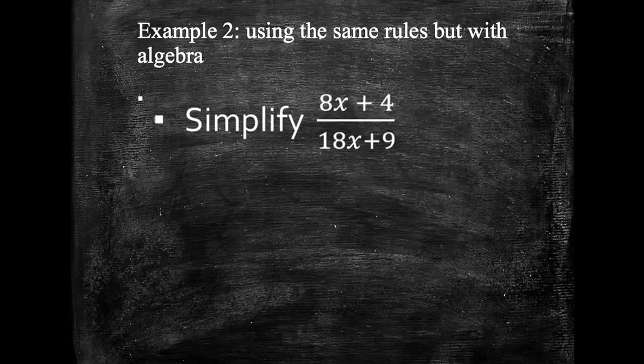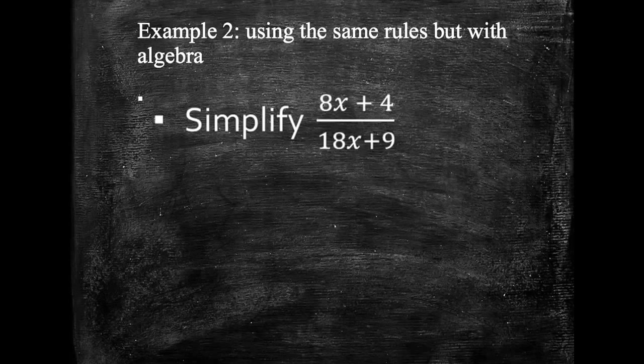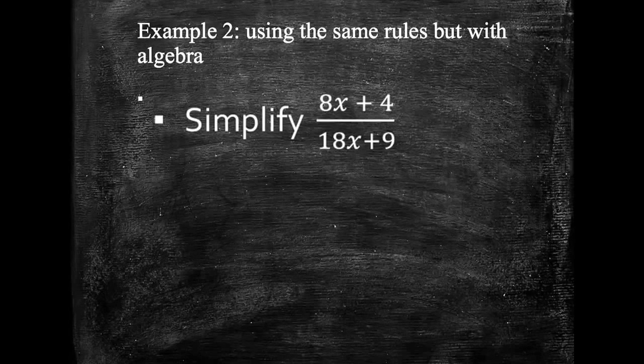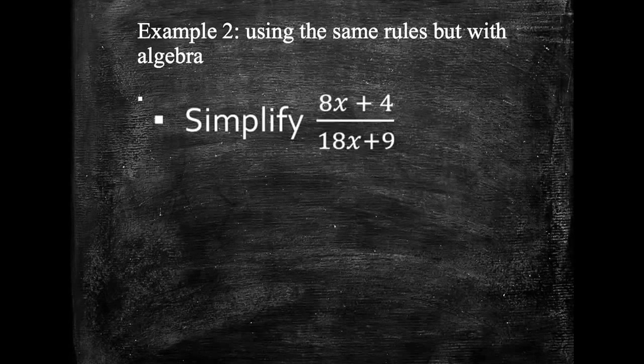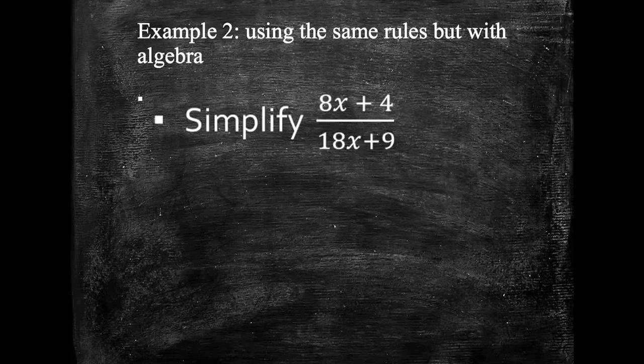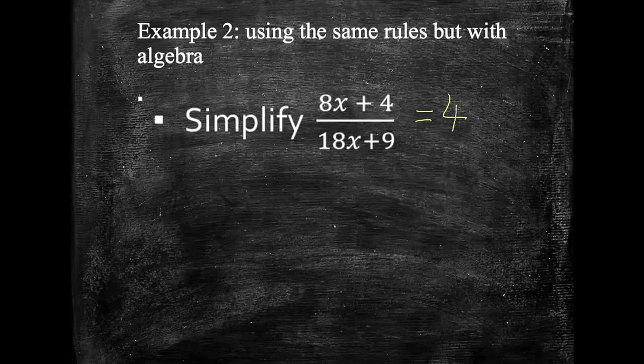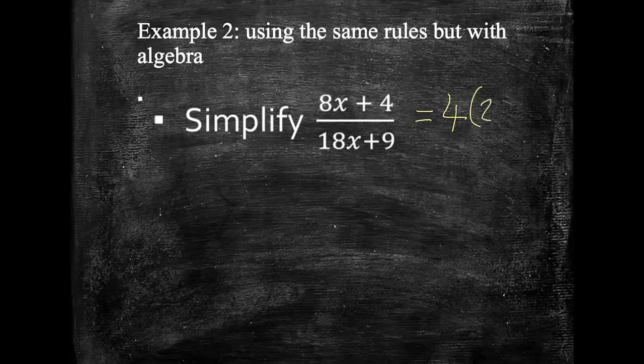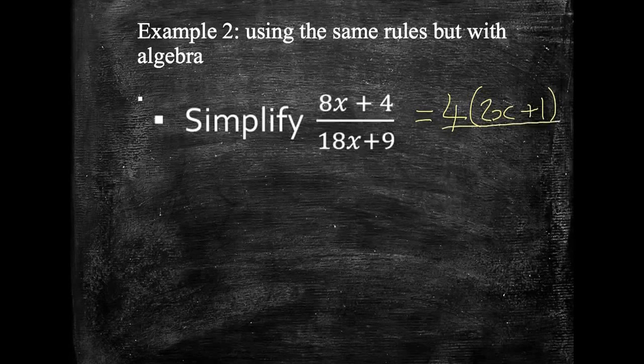We'll look at a fraction then that's got some algebraic terms in it. This one has got just both linear terms. So, there's no powers other than x being to the power of 1. We've got no quadratics or cubics or anything nasty. So, what we need to be able to do is factorise the top and the bottom. So, we're going to think what goes into 8x and 4. Well, 4 goes into both of these. 4 goes into 8x 2 times or 2x times. And 4 goes into 4 once. So, the top part of my fraction factorises to give me 4 lots of 2x plus 1.